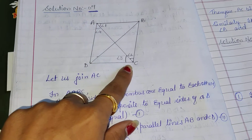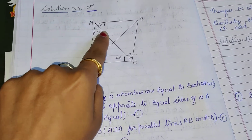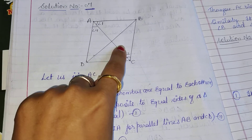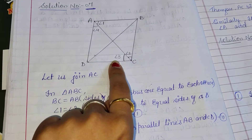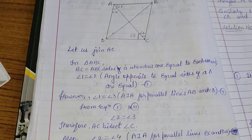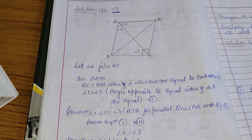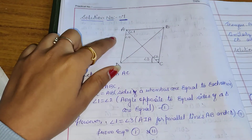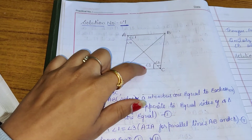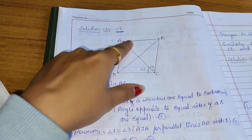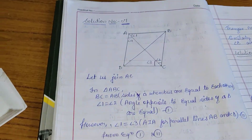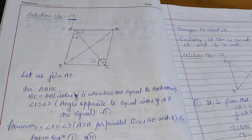We label angle A and angle C. We have given angle 1, angle 4, angle 2, and angle 3. These are alternate interior angles. Angle 1 is equal to angle 4, and angle 2 is equal to angle 3 — these are all alternate interior angles. So, let us join AC.